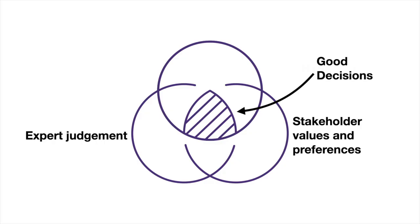But as we know, both preferences and experts are prone to biases. Our confirmation bias might mean that we neglect strategies we haven't heard of. Or students might prefer passively listening to lessons, even if they know it's better if they're actively engaged. Because of biases like these, good decisions also use best practice research evidence.